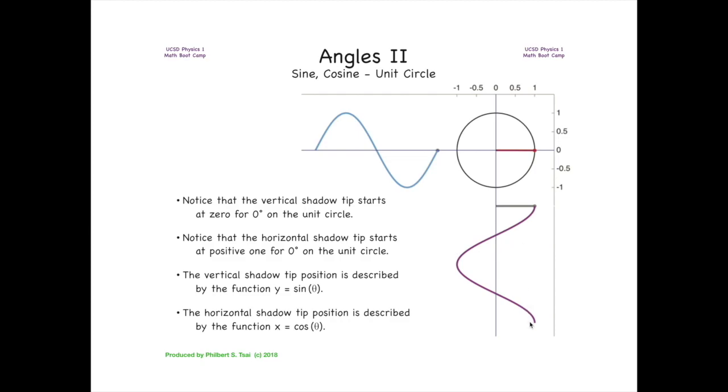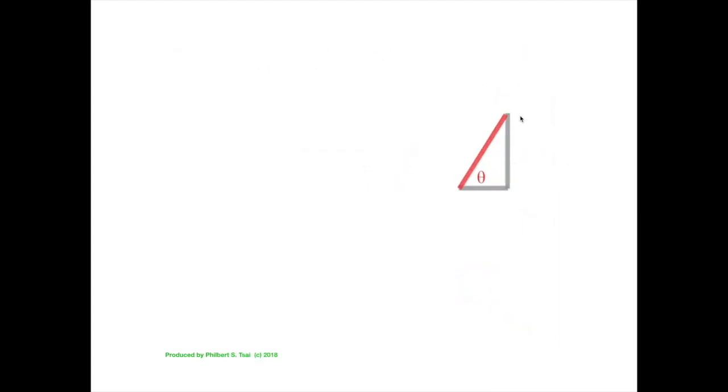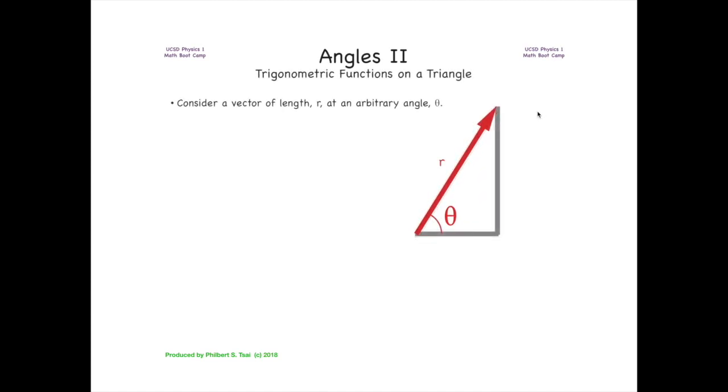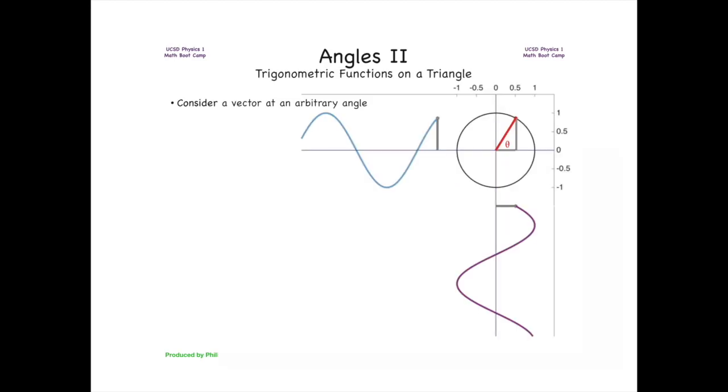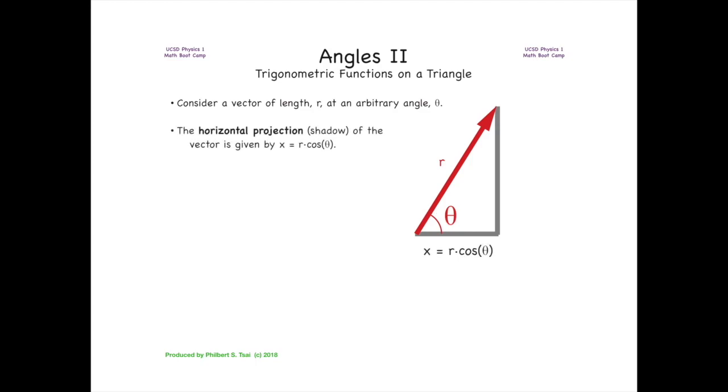Let's consider a situation where we rotate to an arbitrary angle on the unit circle. Let's take a closer look at the horizontal and vertical projections. Let's extrapolate this to a vector of arbitrary length as well as an arbitrary angle. The horizontal projection of this vector is given by r cosine theta.